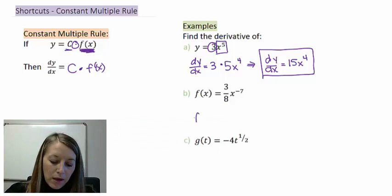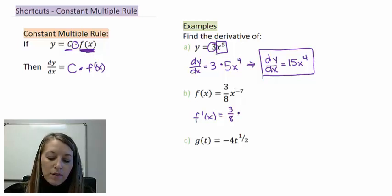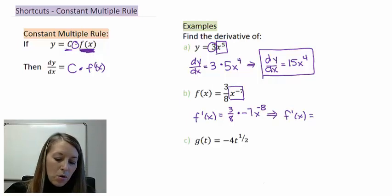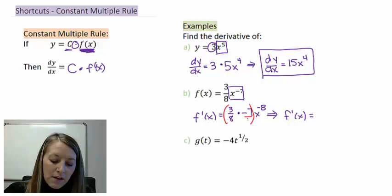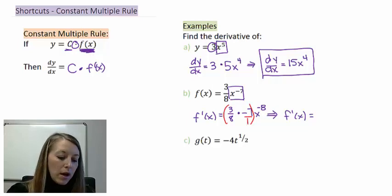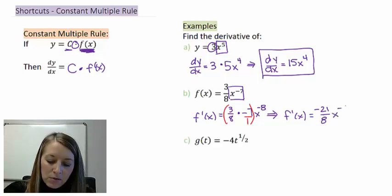In part B, f prime of x: we hold the constant 3/8 out in front — it doesn't matter that it's a fraction — then multiply by the derivative of x to the negative seventh using the power rule: negative 7x to the negative eighth. To simplify, we multiply the fractions: 3 times negative 7 in the numerator gives negative 21, and 8 times 1 in the denominator gives 8, so f prime of x equals negative 21/8 times x to the negative eighth.